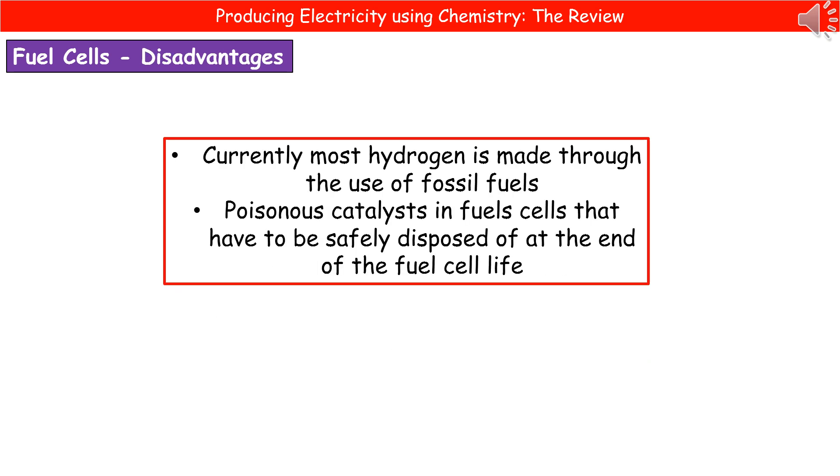But as with all things there are also disadvantages we need to be aware of. Firstly, most of the hydrogen we have available currently is made through the use of fossil fuels, so that kind of negates that whole no carbon dioxide made side of things. Secondly, there are poisonous catalysts used in fuel cells and once the fuel cell comes to the end of its life we have to dispose of them safely, otherwise there could be problems in the environment as a result of poor disposal techniques.